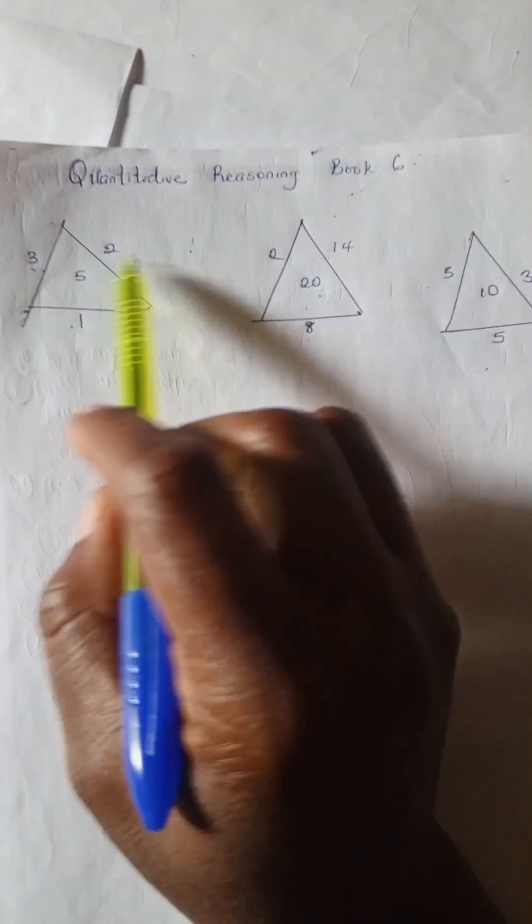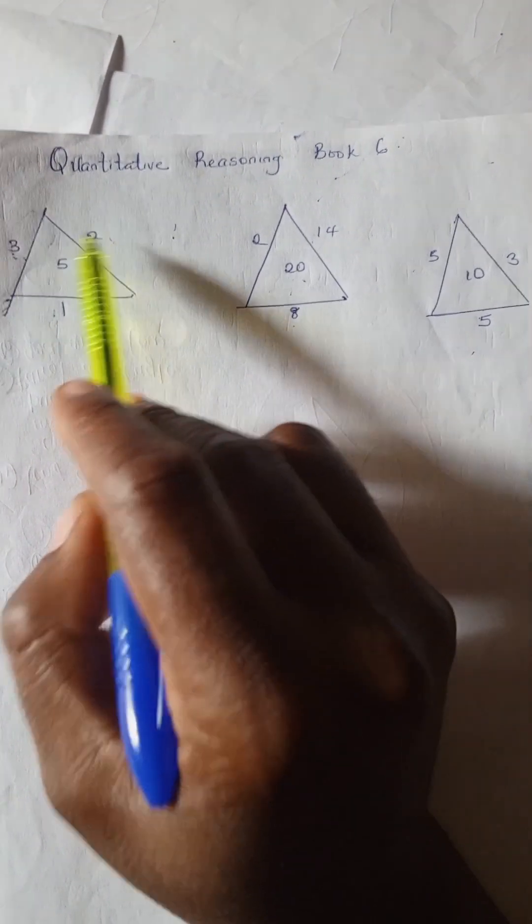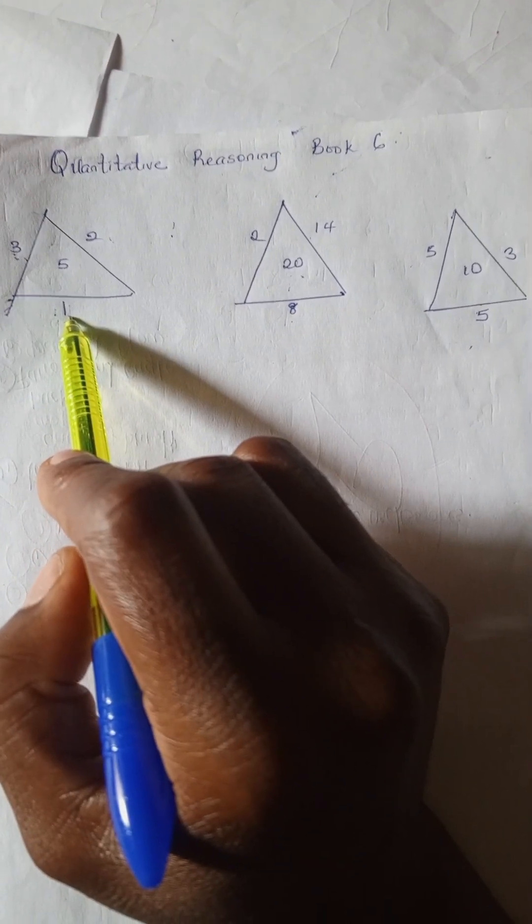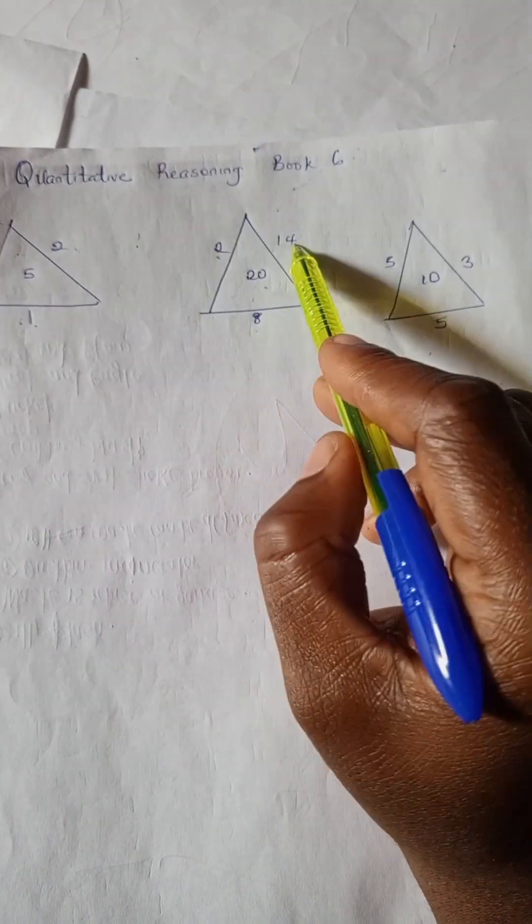Let's start with this example. 3 times 2 is 6, and 5 plus 1 is 6. That's equivalent numbers.